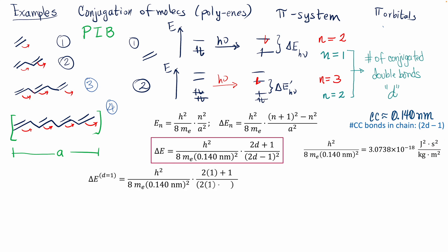For one double bond, the change in energy: the numerator gives 2×1+1 = 3, and the denominator gives (2×1−1)² = 1. So the transition energy equals the constant times 3, giving a specific energy value.